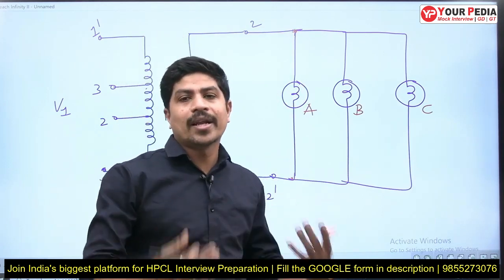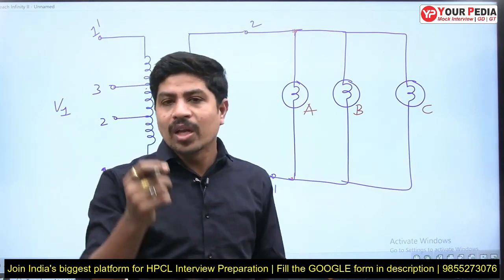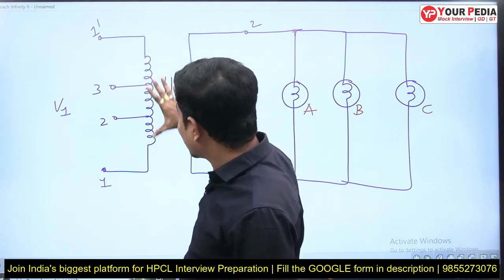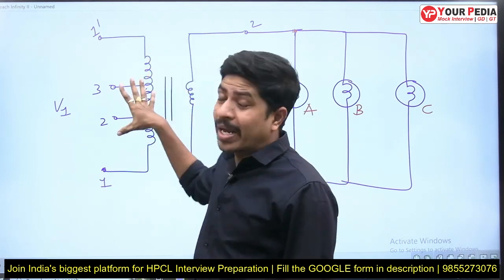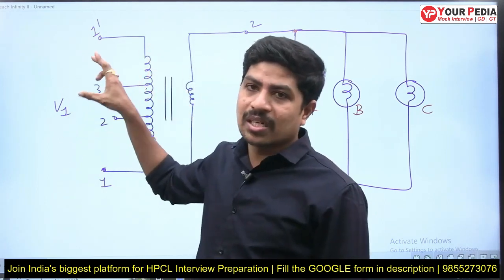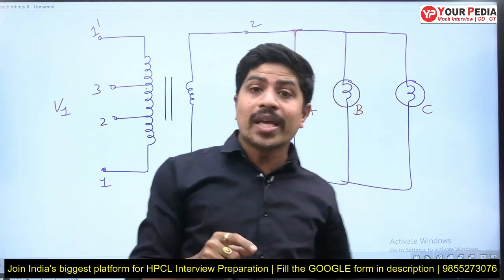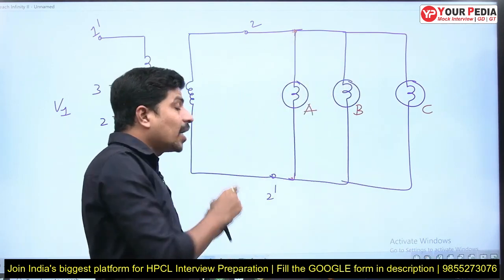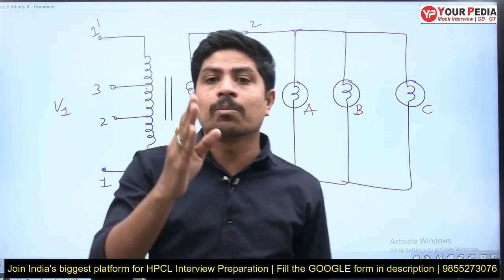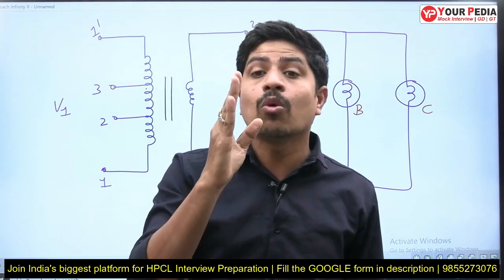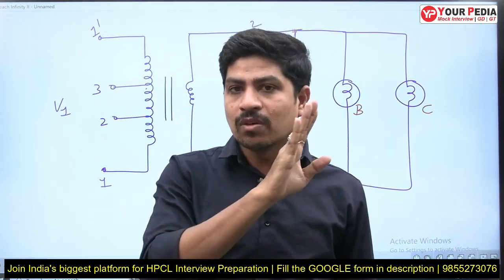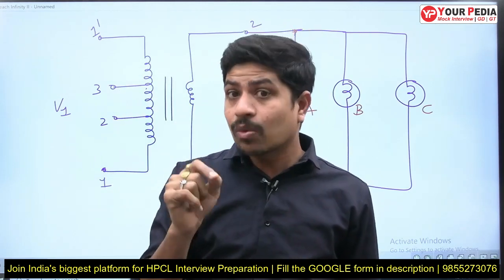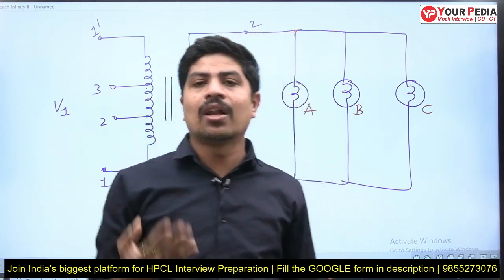What shall we do? By changing the turns on the primary, we are going to increase the voltage at the secondary without switching off the supply. We are not going to switch off the supply — that is the advantage. How is it done?